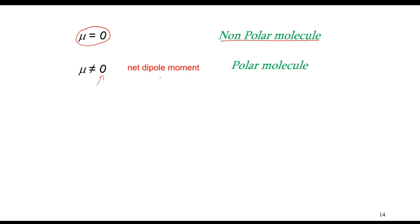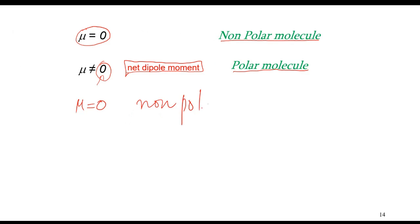Very important: if dipole moment is zero, the molecule will be nonpolar. If dipole moment is not equal to zero, the molecule will be polar. In that case, we use the specific term 'net dipole moment.' So, if dipole moment is zero the molecule is nonpolar; if there is a net dipole moment, the molecule is polar.